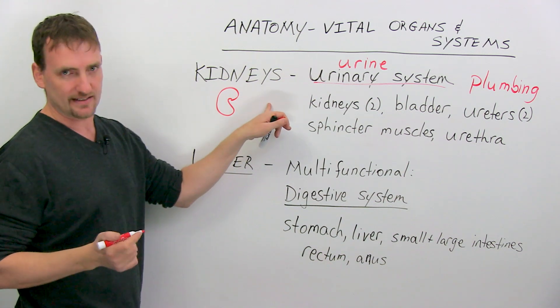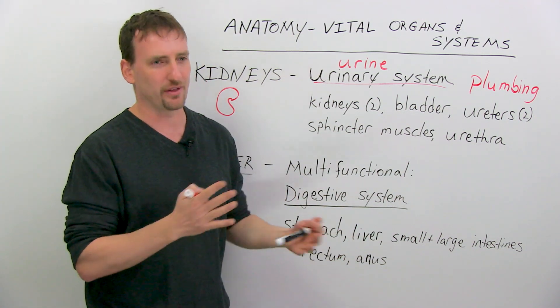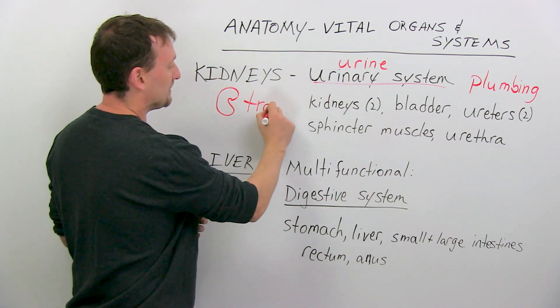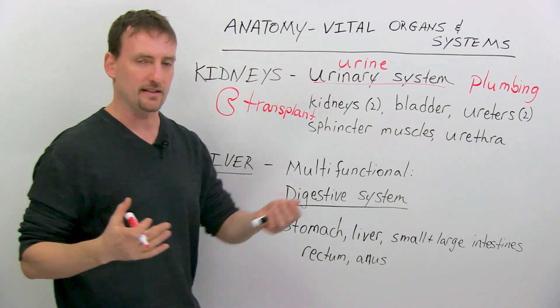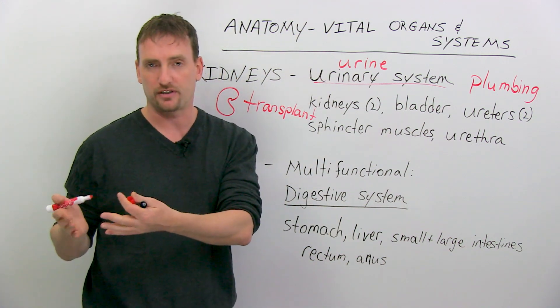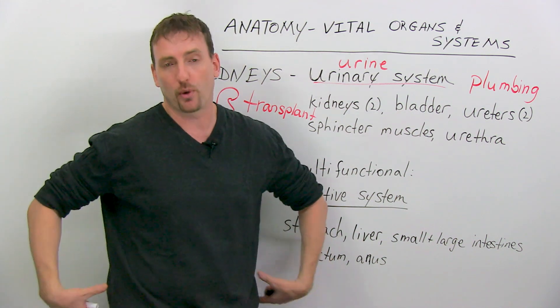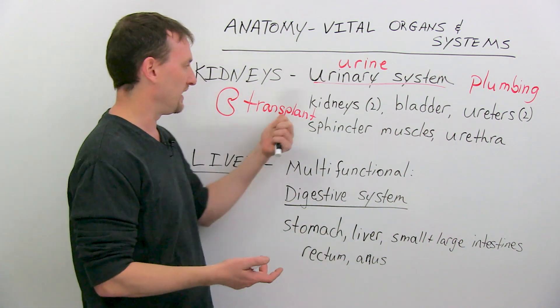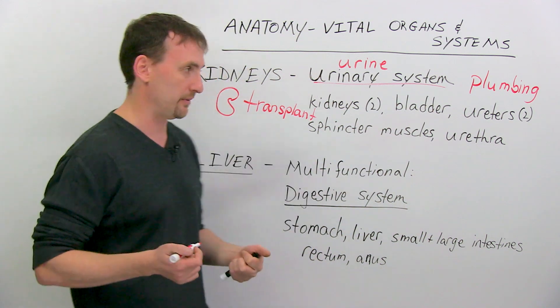Now, you have two of these. You can live with one. You can't live with neither of them. You have to have at least one, so a lot of people get a transplant. Now, you can have organ transplants, and kidneys are very common transplants. You can take from a healthy person, you can take one out and give it to somebody else who has both of their kidneys are bad. Because without your kidneys, you're going to die, so you can have a transplant and move an organ from one healthy body to another healthy body.